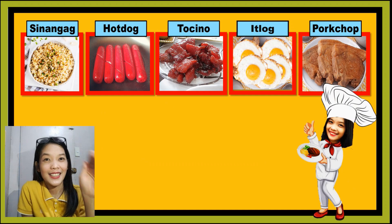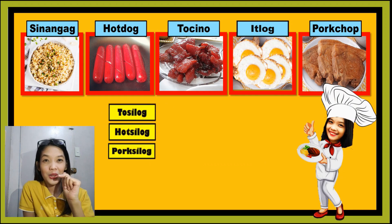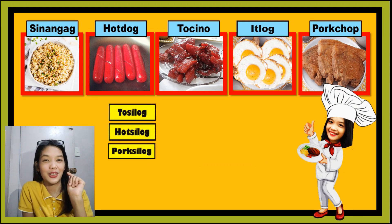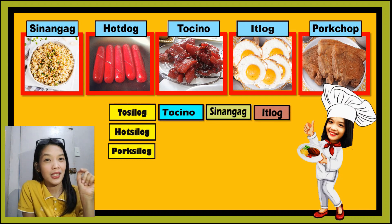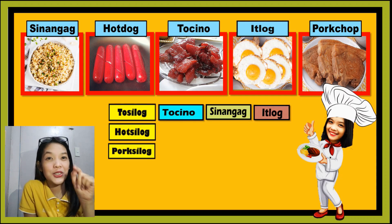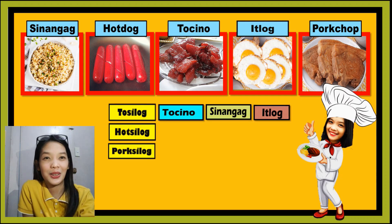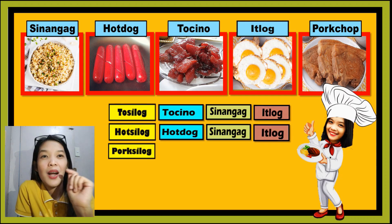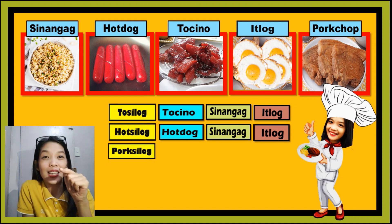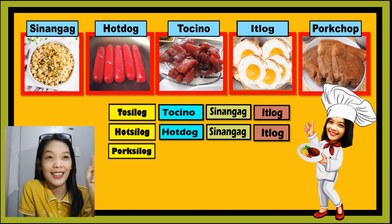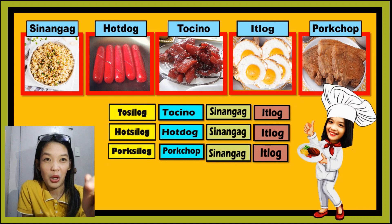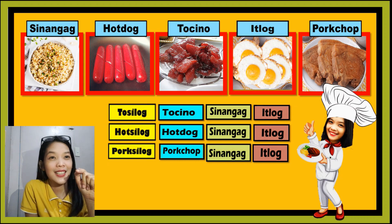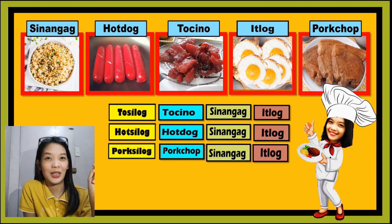Miss Dayan's orders are tosilog, hotsilog, and porksilog. Tosilog is made up of tosino, sinangag, and itlog. Hotsilog is made up of hotdog, sinangag, and itlog. While porksilog is made up of pork chop, sinangag, and itlog.